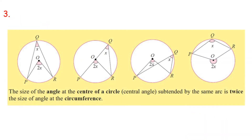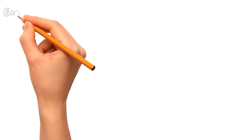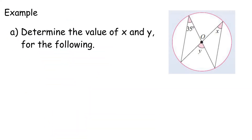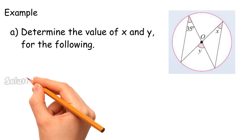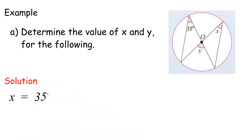Property 3: The size of the angle at the center of a circle (central angle) subtended by the same arc is twice the size of the angle at the circumference. Example A: Determine the value of X and Y. X equals 35 degrees. Y equals 2 times 35 degrees, equals 70 degrees.